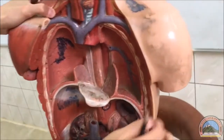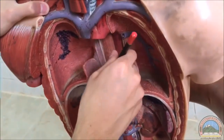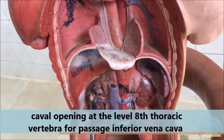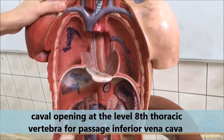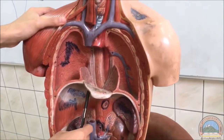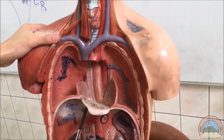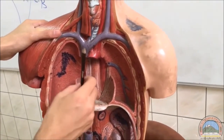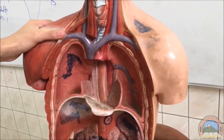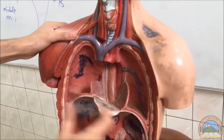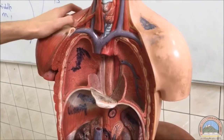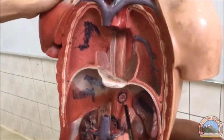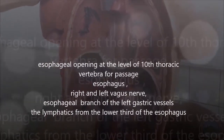The diaphragm contains three openings for passage of very important structures. Firstly, this is the caval opening for passage of the inferior vena cava. So this is the inferior vena cava — it will pass through the caval opening. The caval opening is at the level of the eighth thoracic vertebra. It's important to know the other structures that pass through this and the other openings as well.